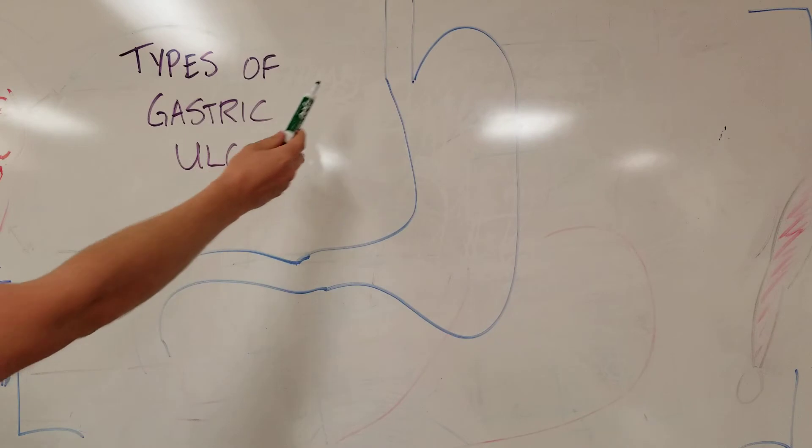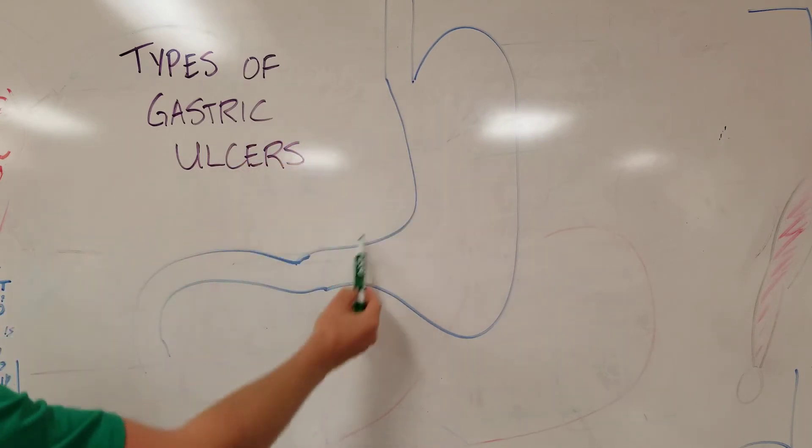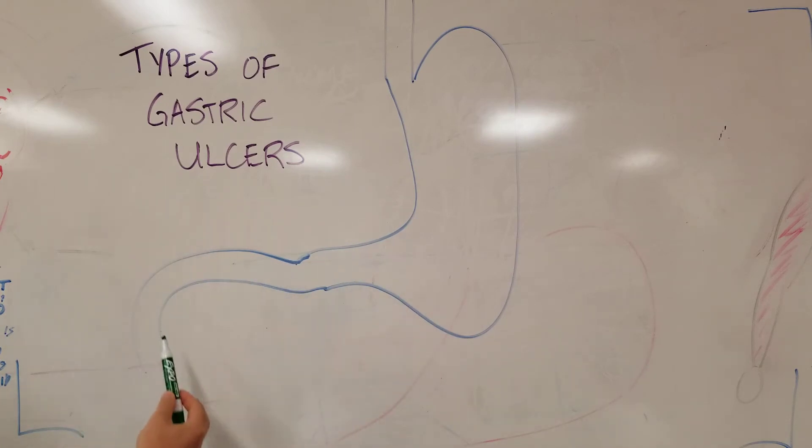So here you can see we have an esophagus, a stomach with the lesser curve, the greater curve, the angle of hiss, the insensura, the antrum, the pylorus, and the duodenum.